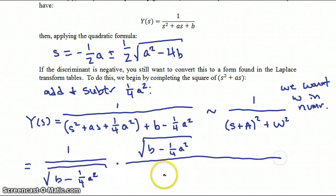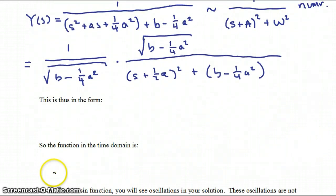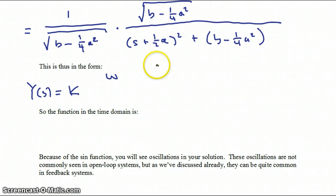And in the denominator, what we'll have is S plus 1 half A quantity squared plus omega squared. Therefore, we have now put Y of S into the form of Y of S is equal to some constant times omega all divided by the quantity S plus capital A squared plus omega squared.